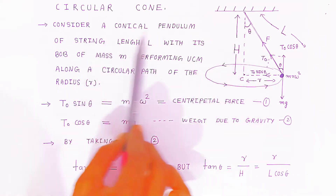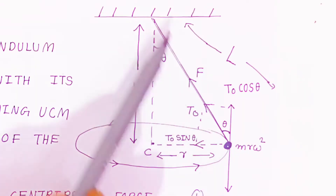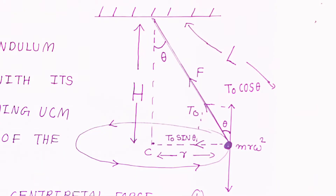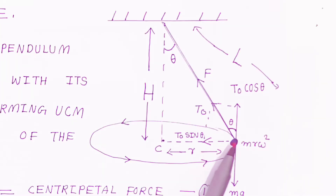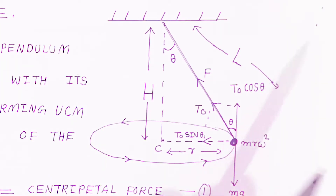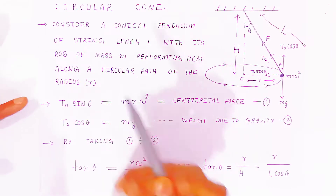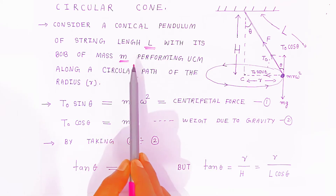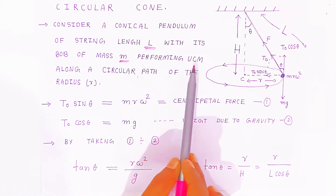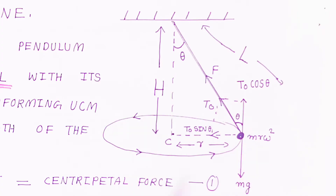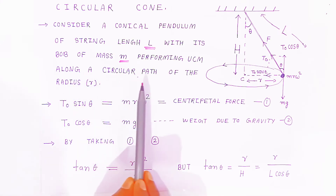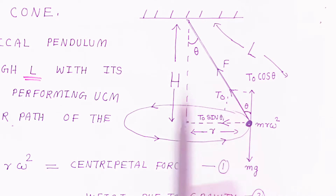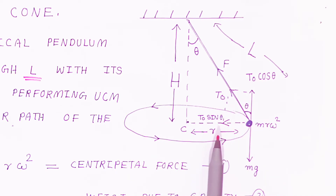Now we consider a conical pendulum with string length L and a bob of mass m. The bob performs uniform circular motion along a circular path of radius r.